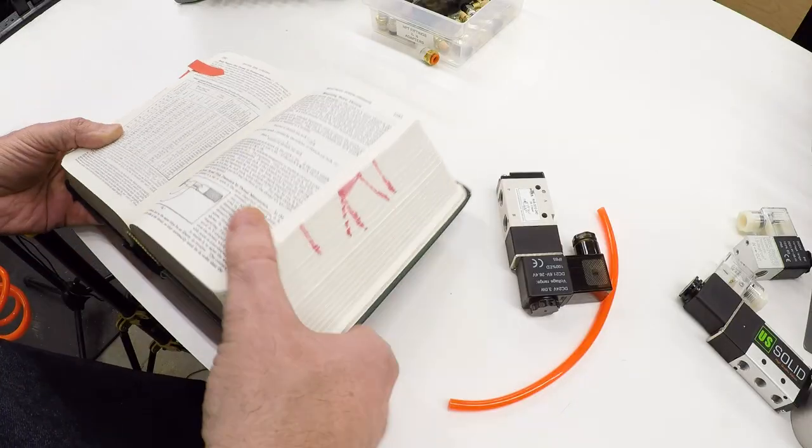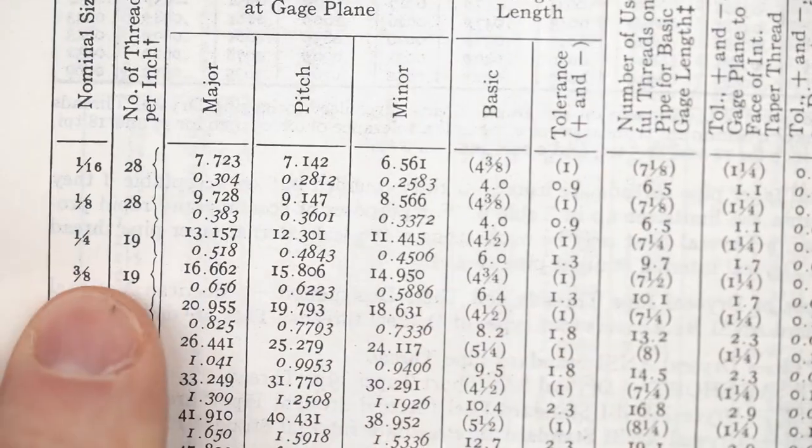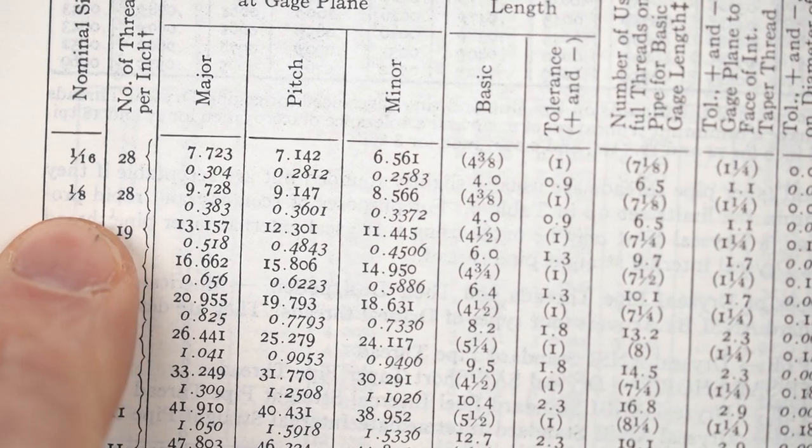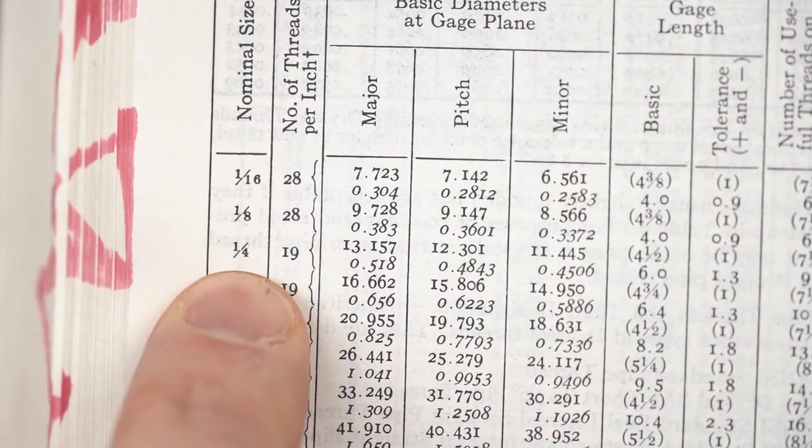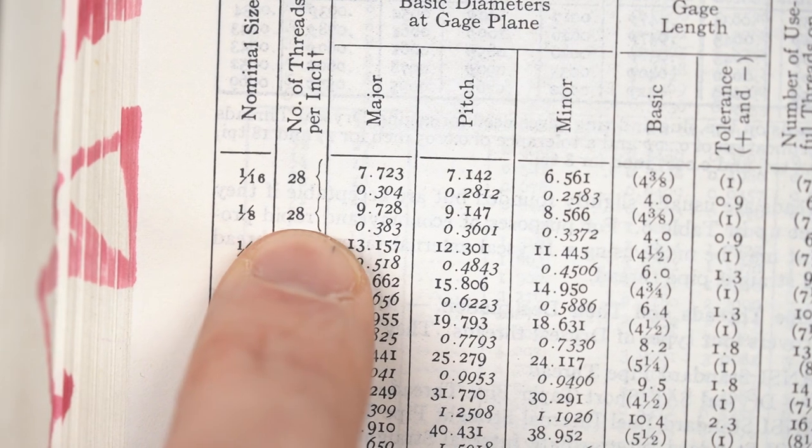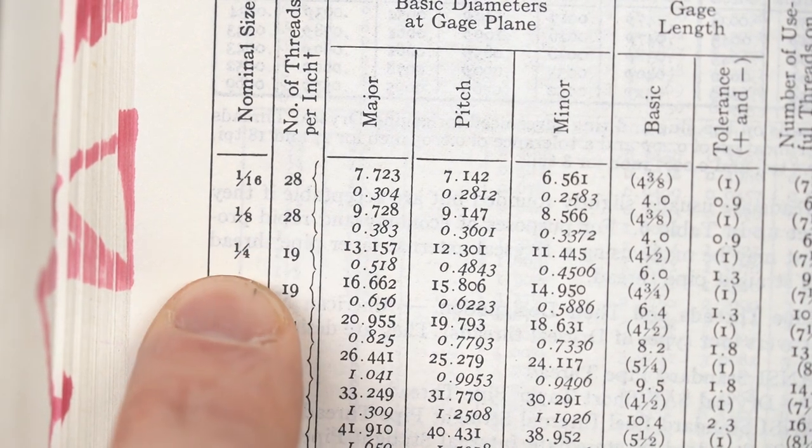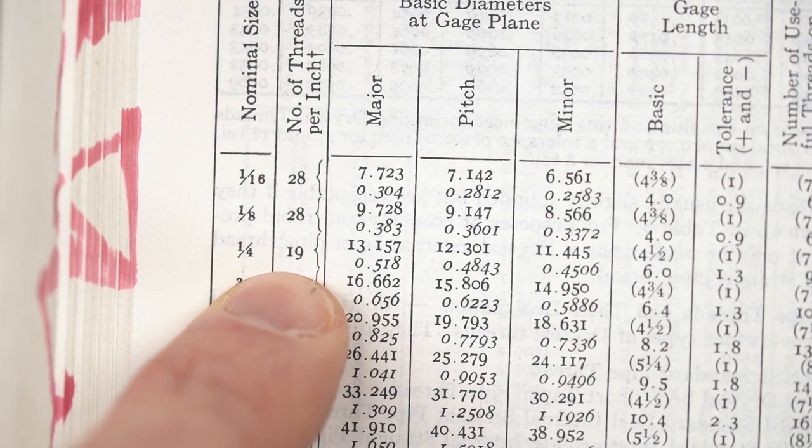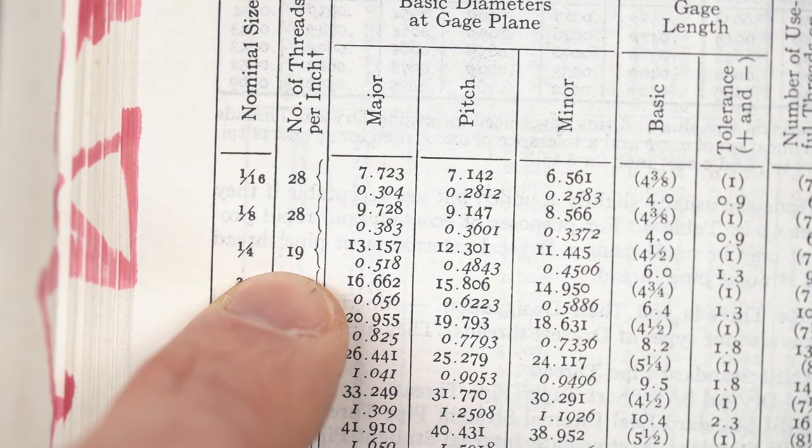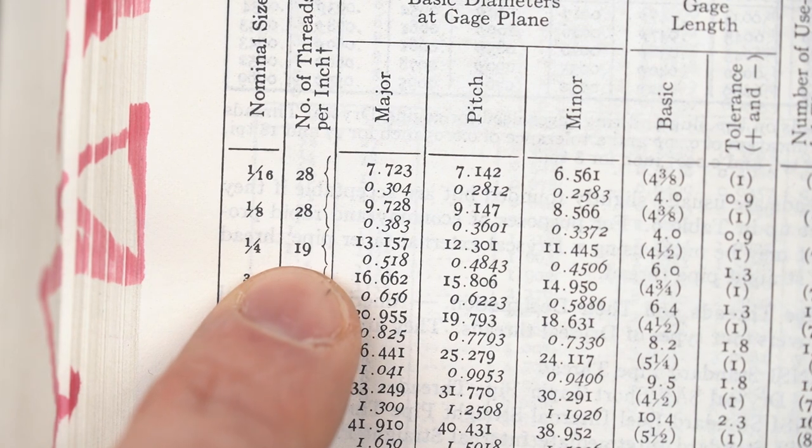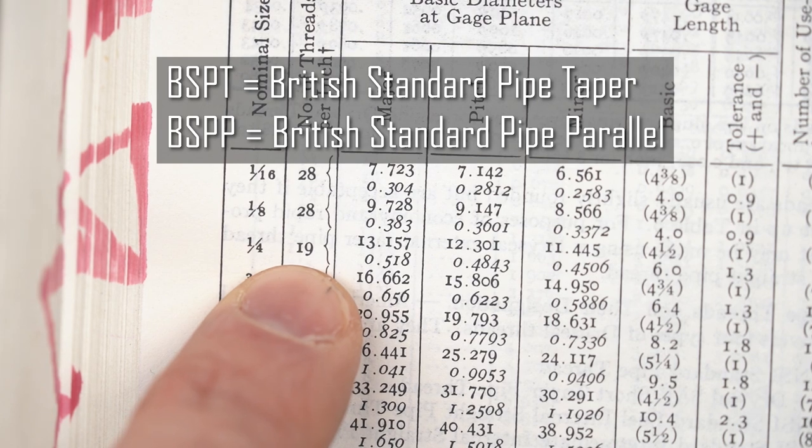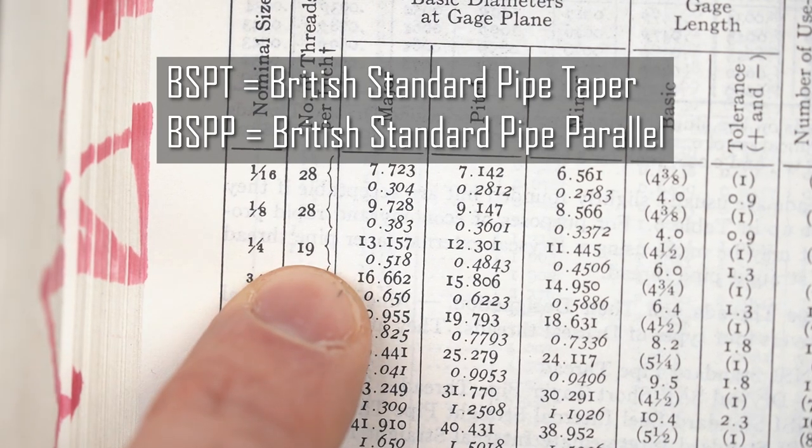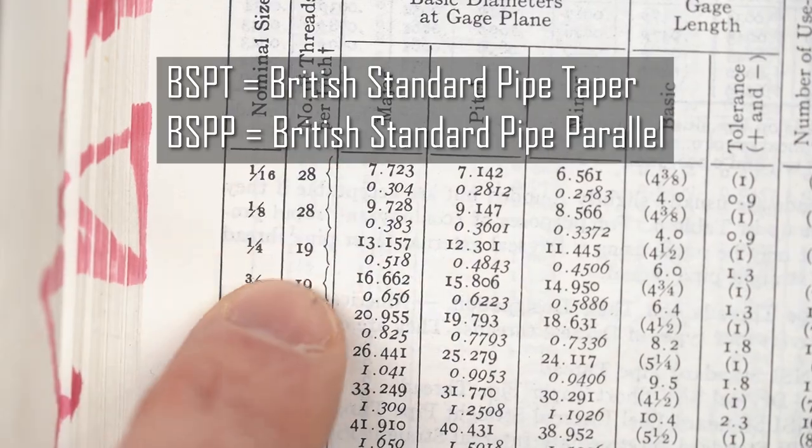If we flip over here to the British pipe threads, you can see that we have the same kinds of designations. We've got eighth inch and quarter inch, but you'll note that the eighth inch is 28 threads per inch instead of 27. And the quarter inch is 19 threads per inch instead of 18. So the pitch of the threads is different between the American and the British pipe thread. These are commonly called BSP, British Standard Pipe. If they're tapered, they'll be BSPT. If they're straight, they'll be BSPS.